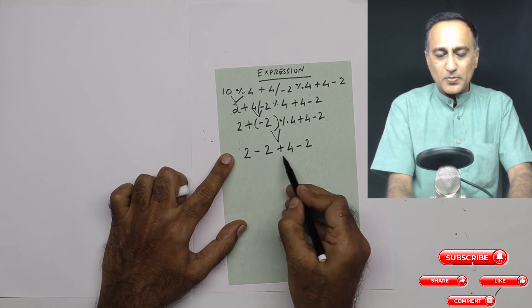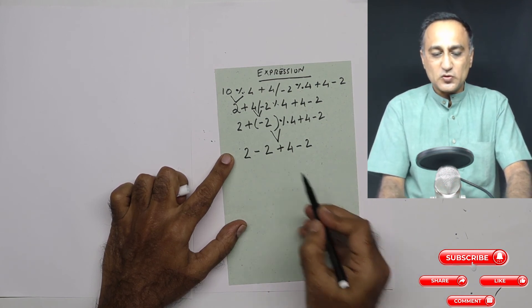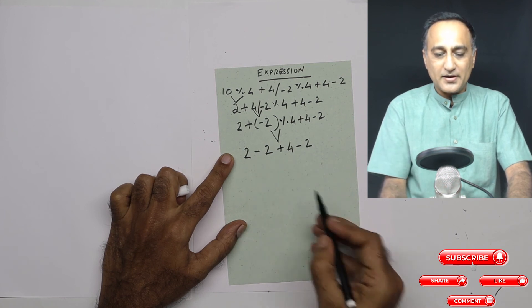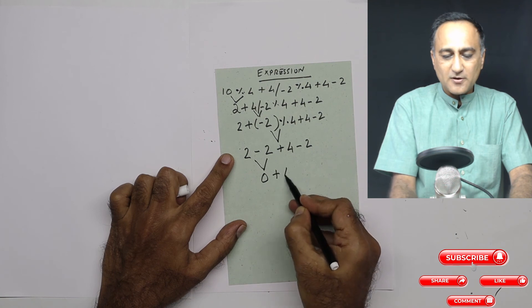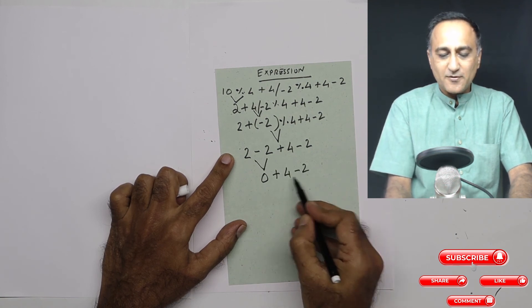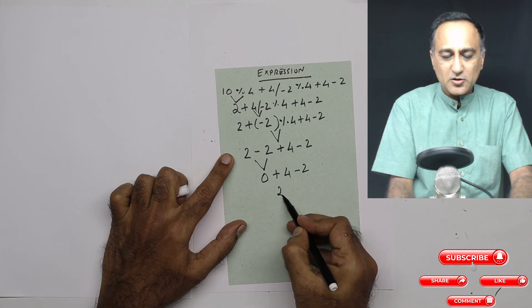Now if you look at it, all operators are at equal precedence, so I need to go from left to right. So 2 minus 2 here is going to be 0 plus 4 minus 2. Next step: 0 plus 4 minus 2 happens to be just 2.